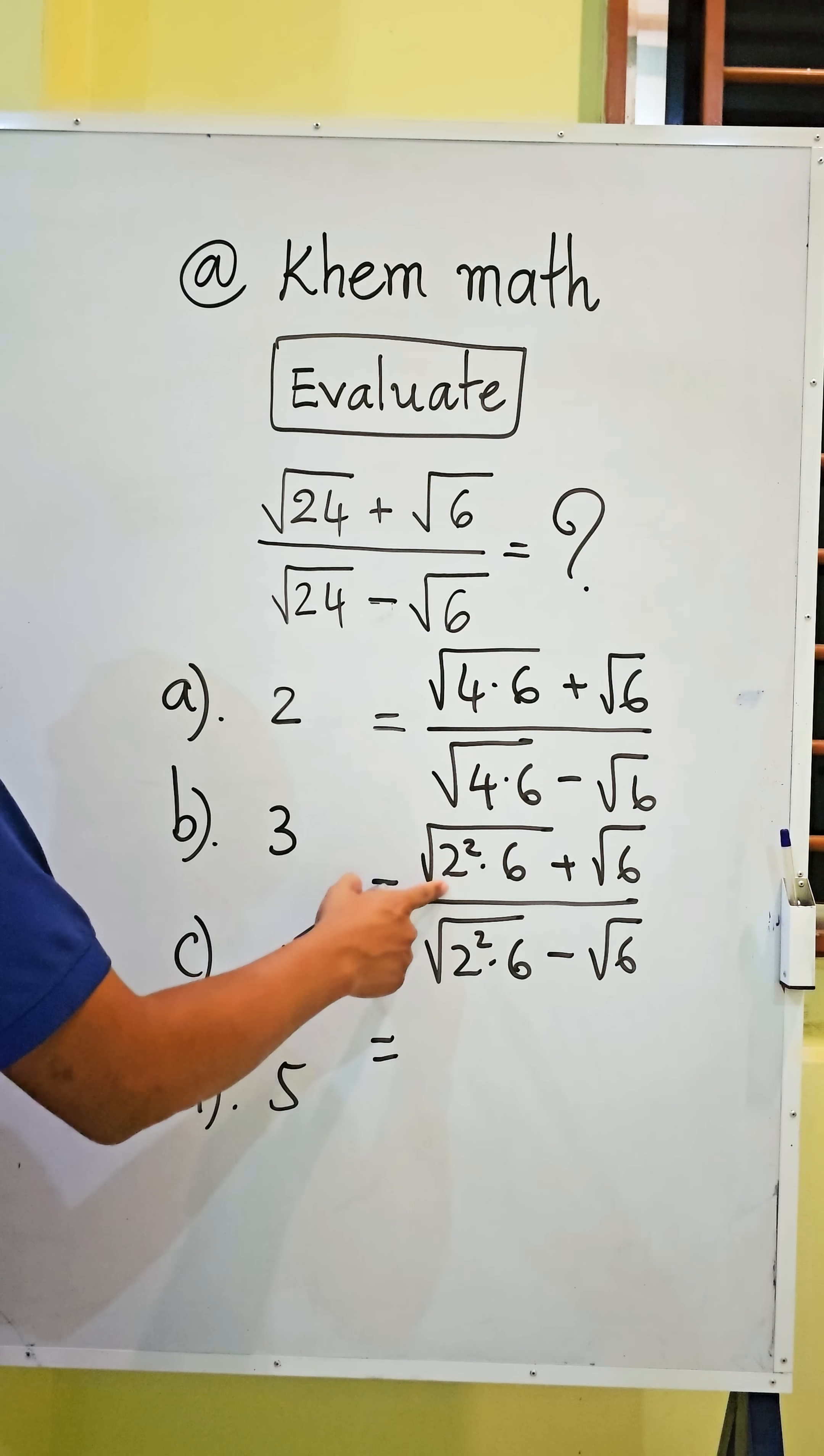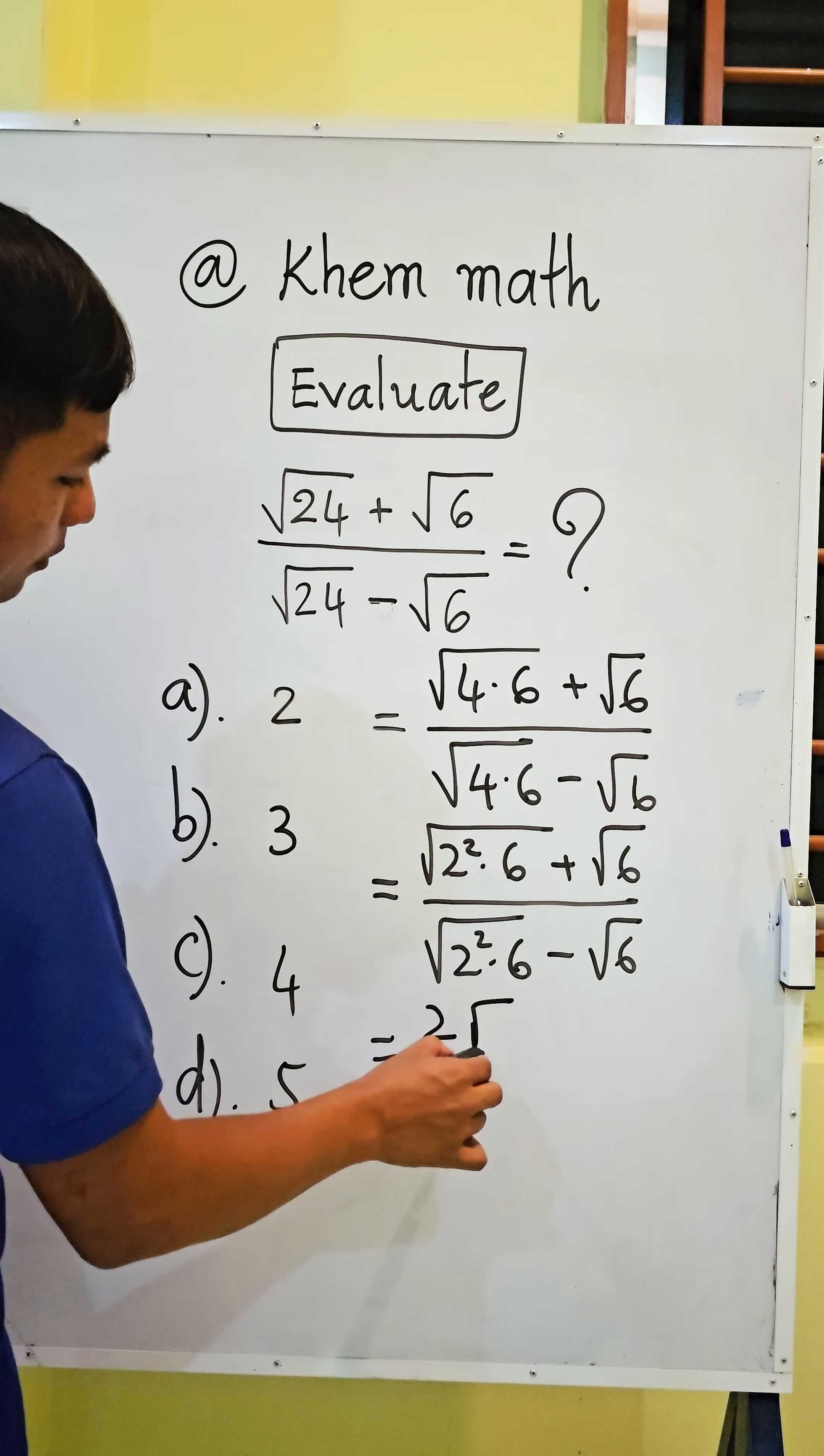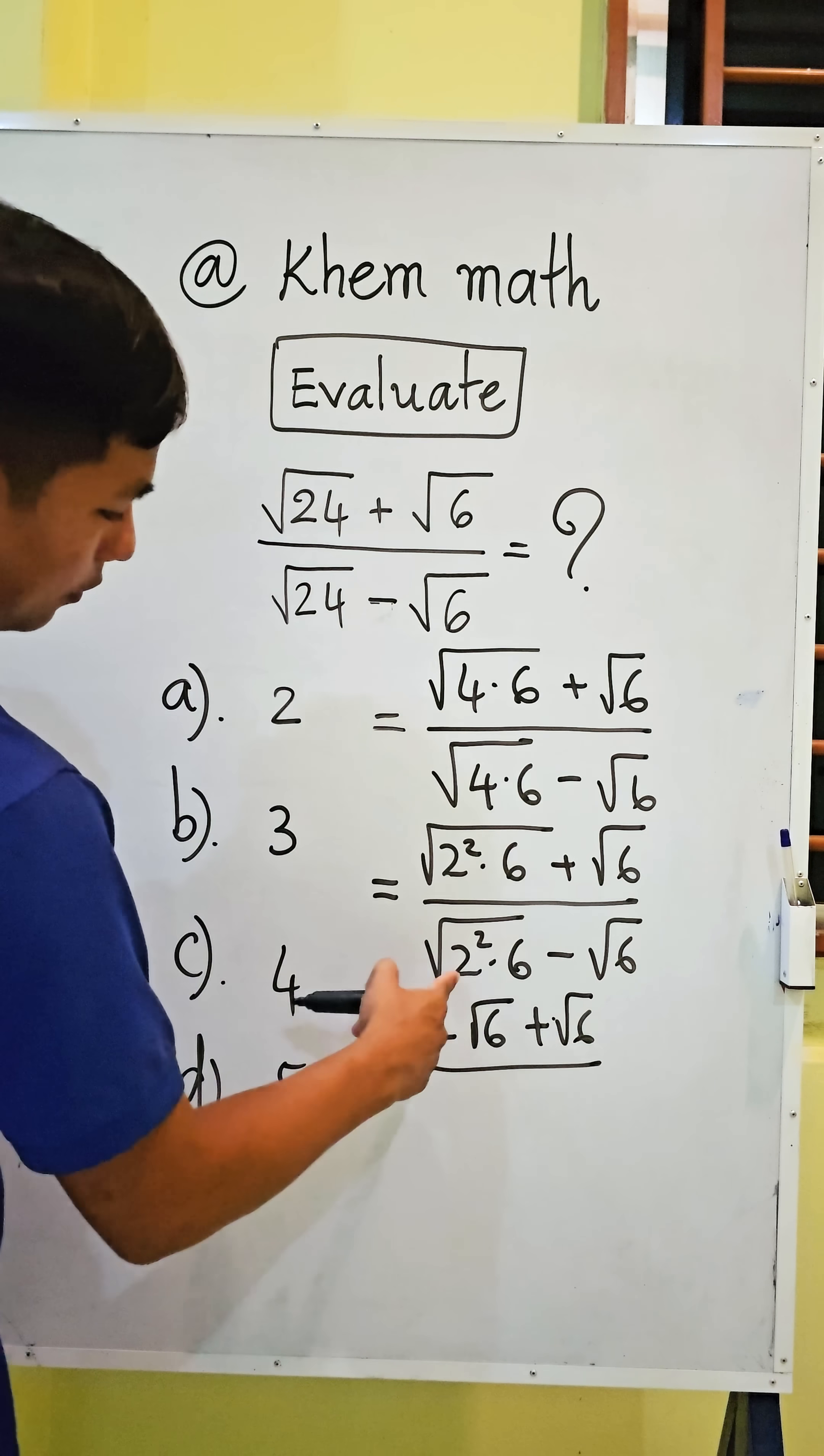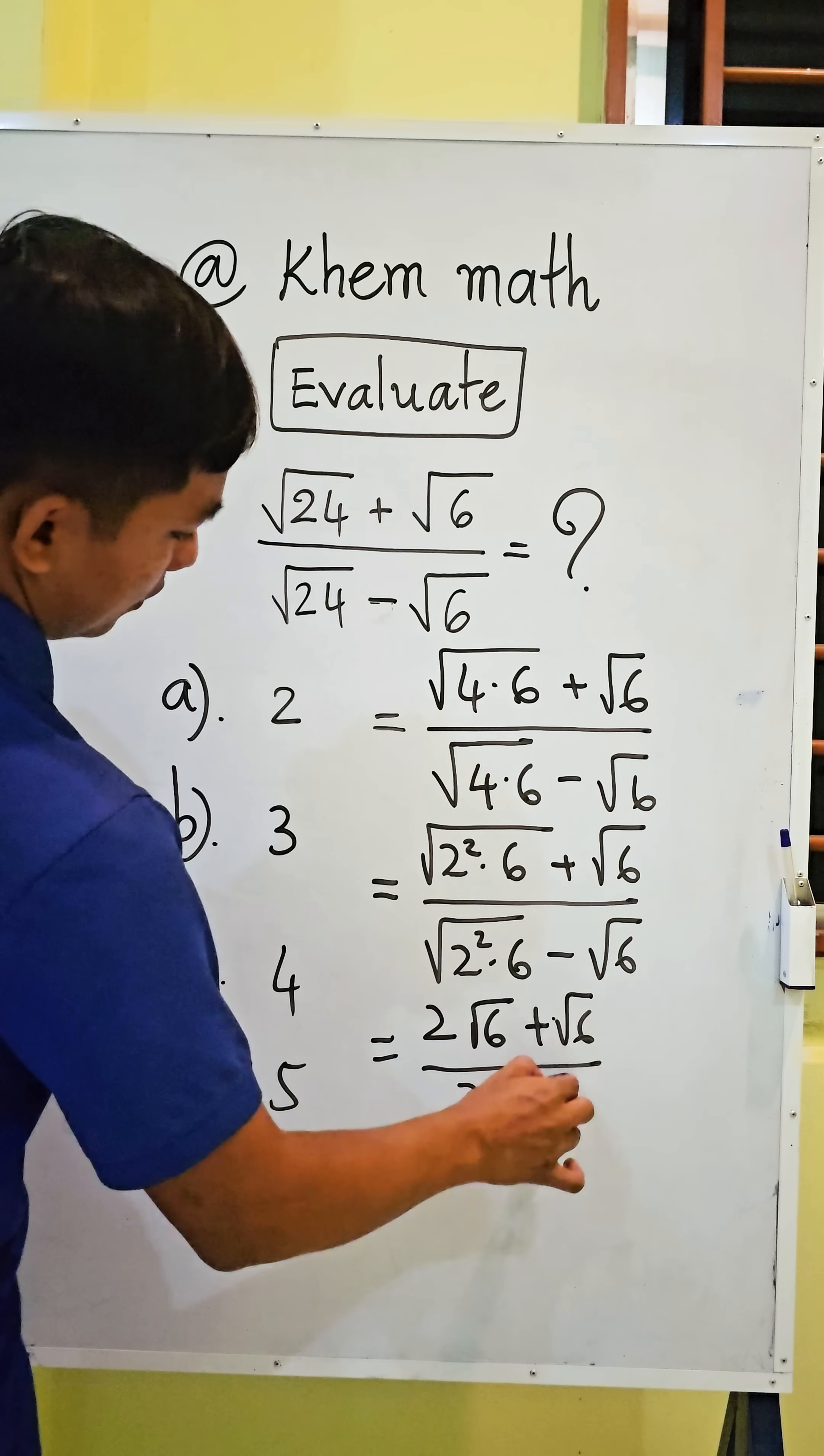We can simplify the square roots. We get 2 times square root 6 plus square root 6, and divide by 2 times square root 6 minus square root 6.